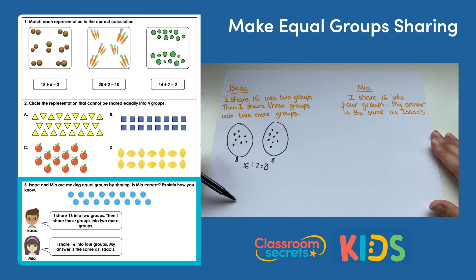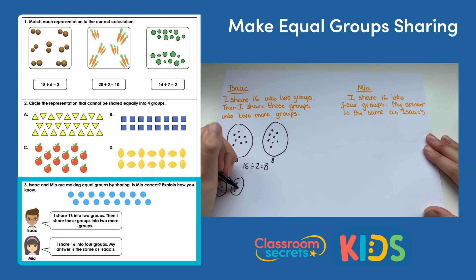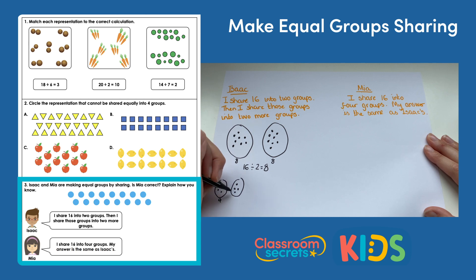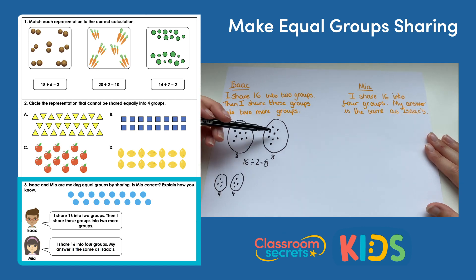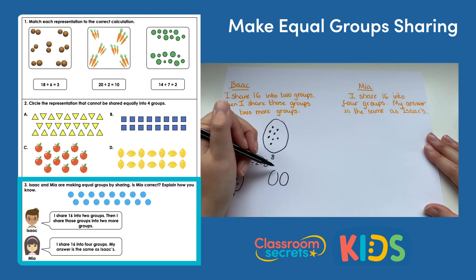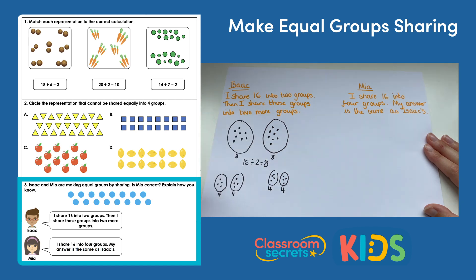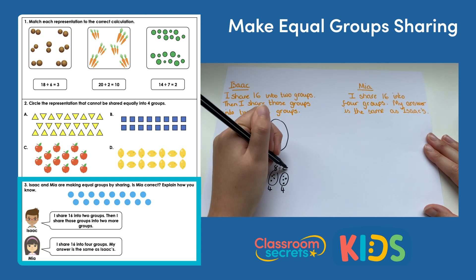Isaac is going to share his first group of eight into two, and his next group into two as well. Eight into two gives four and four. He does the same with the second group of eight — four and four again. So he's done eight divided by two, and another eight divided by two, ending up with four equal groups of four.